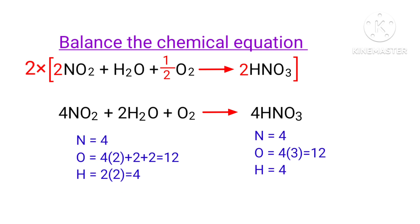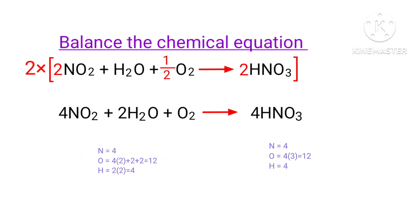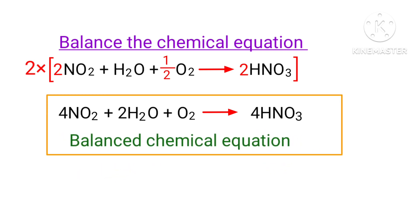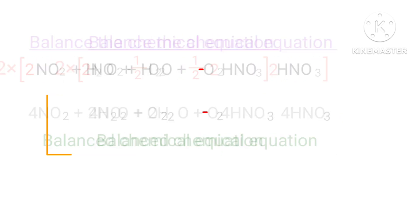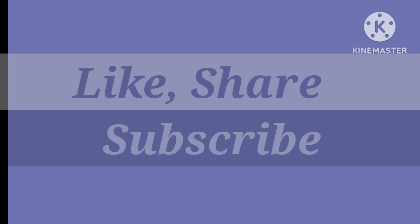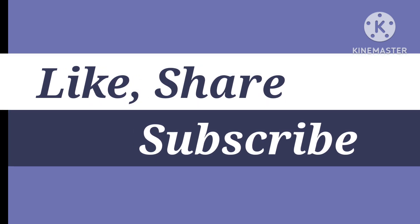The equation is now balanced. There are 4 nitrogen atoms, 12 oxygen atoms, and 4 hydrogen atoms on both sides. If you like this video, please subscribe my channel and press on the bell icon.